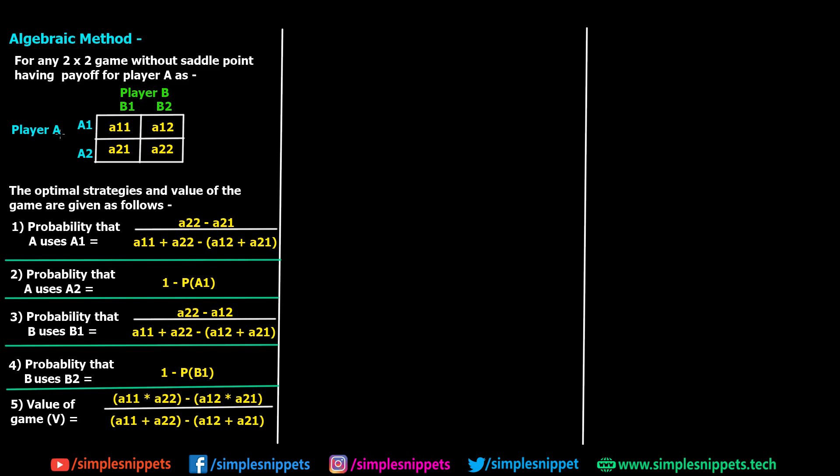As you can see on the screen, we have a 2x2 game and we are considering that in this game we do not have a saddle point. Player A has strategies A1 and A2, player B has B1 and B2, and the cells inside the matrix are as follows: A11 which means first row first column, A12 means first row and second column, and so on and so forth.